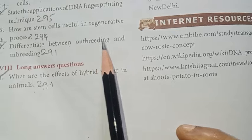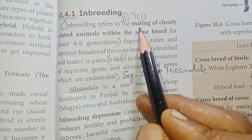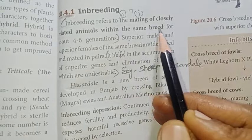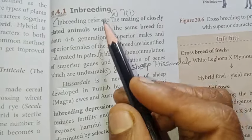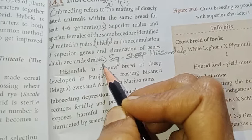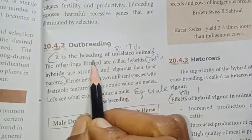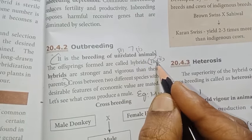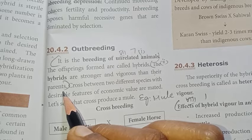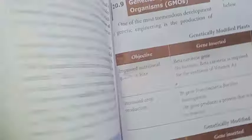Number seven: Differentiate between outbreeding and inbreeding. Page 291. Inbreeding: it refers to the mating of closely related animals within the same breed for about 4 to 6 generations; it helps in the accumulation of superior genes and elimination of undesirable genes; example — sheep. Outbreeding: it is the breeding of unrelated animals; the hybrids are stronger and more vigorous than their parents; example — mule.